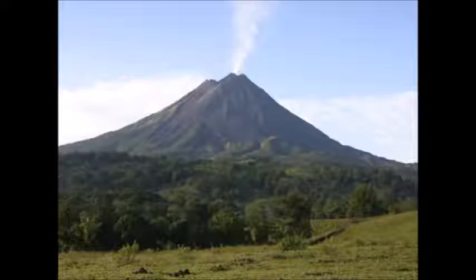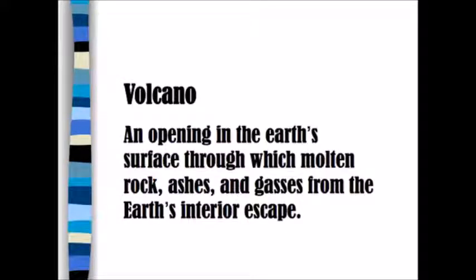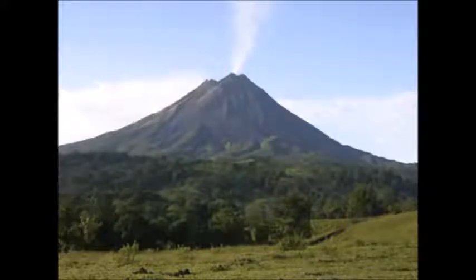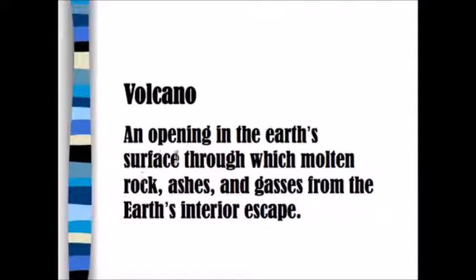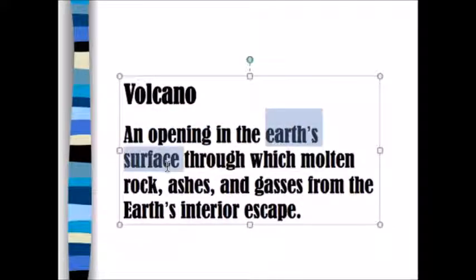Come on, you've got to know what this is. Look at that steam coming out of a volcano! A volcano is an opening in the earth's surface through which molten rock, ash, and gases from the earth's interior escape. Notice that it's escaping — and notice how green it is here; volcanic soil is very rich. Please highlight 'opening in earth's surface,' 'rocks, ashes, and gases,' and 'escape.'